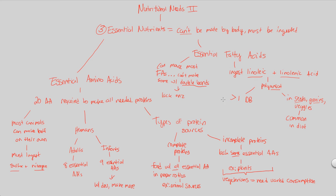So that covers our look at nutritional needs. You might wonder about carbohydrates — but carbs are not essential to us. We can actually make carbs on our own through a process called gluconeogenesis — making new glucose. If you take biochemistry, you'll learn all about gluconeogenesis. Just know that carbs do not classify as essential nutrients; only amino acids and fatty acids do.